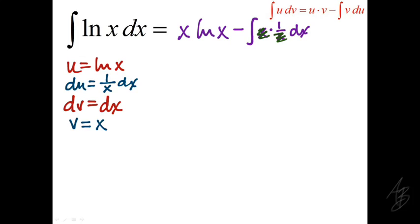So we're going to end up with x times the natural log of x minus the integral of 1 with respect to x, which is simply x. So we get x times the natural log of x minus x plus our constant of integration since this is an indefinite integral.